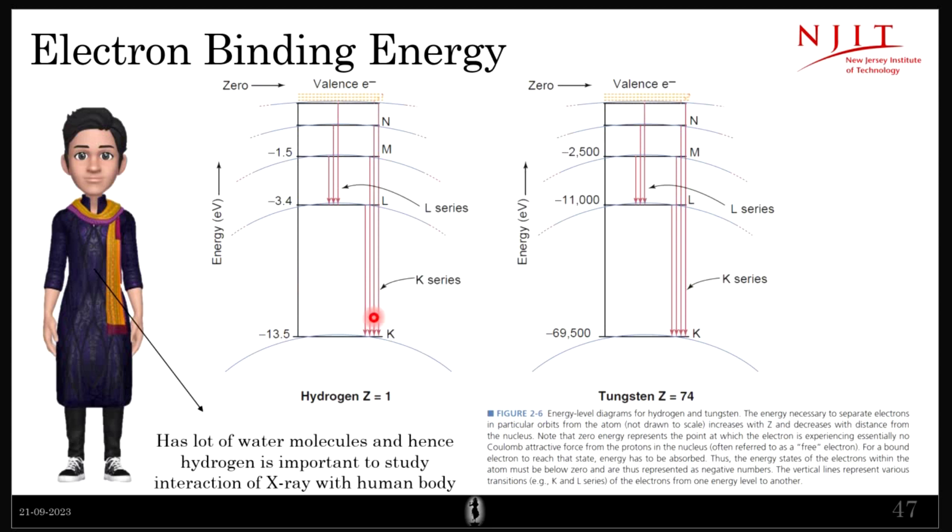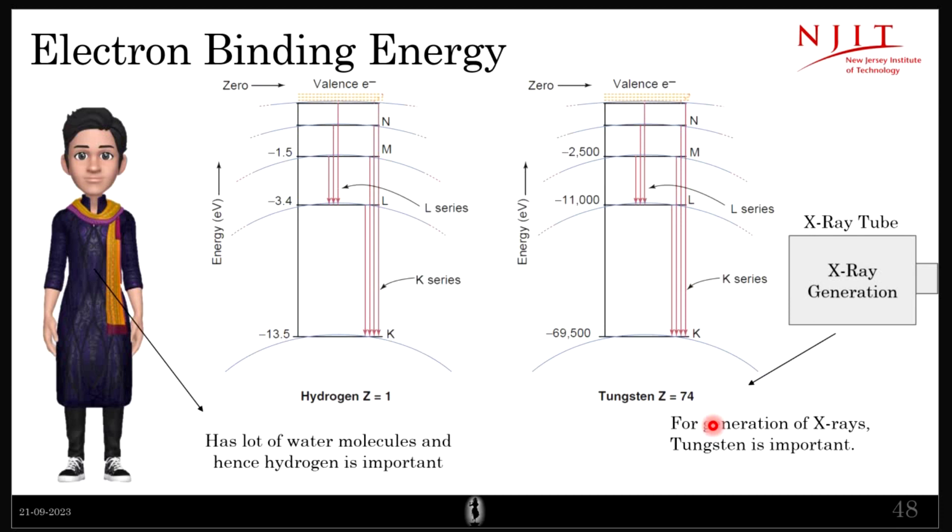Okay, so why did the textbook have just hydrogen and tungsten over here? There is a big reason for that. Our bodies have a lot of water molecules which has hydrogen, so that's the reason why hydrogen is an important element to study for medical imaging purposes. And tungsten will be used for X-ray generation, and that's the reason why you will usually see an example of tungsten for these kinds of studies. Okay, all okay with this? Any problem, any doubts, any questions?